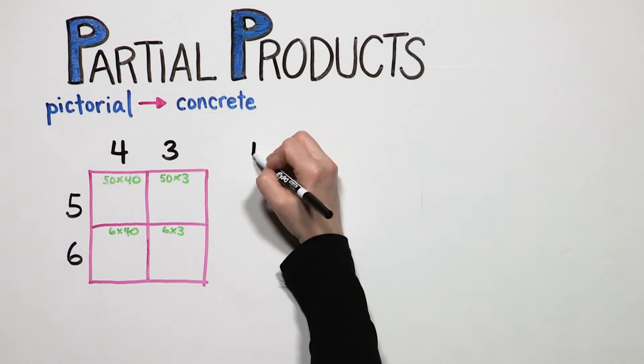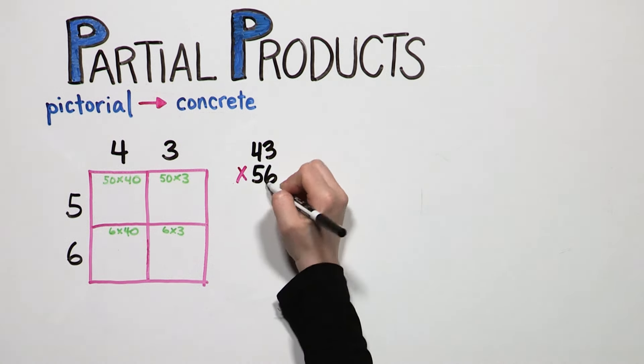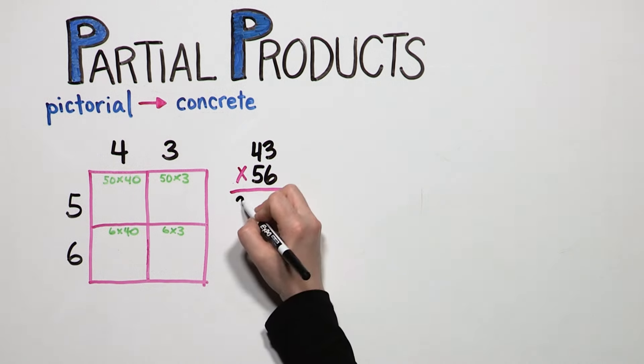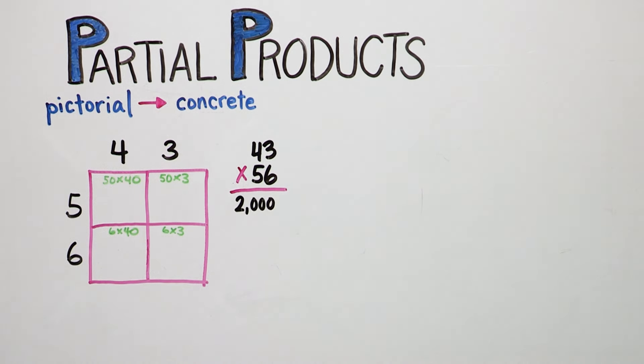Using partial products to solve 43 times 56 looks like this. She will start by multiplying tens times tens.